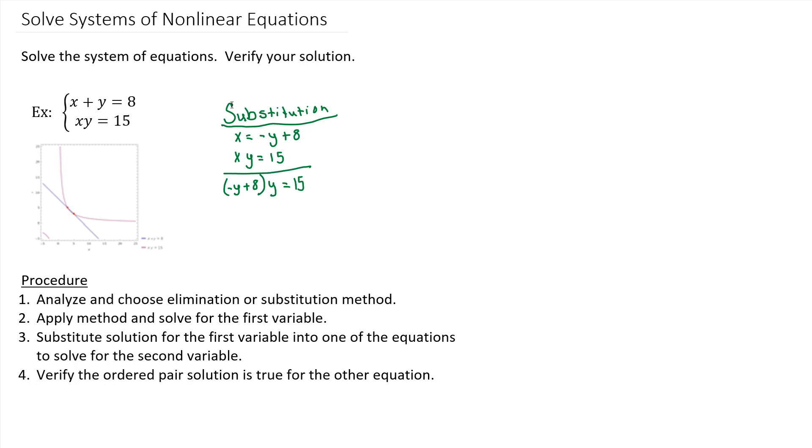I just need to distribute this Y on both pieces here. Y times negative Y is negative Y to the second. 8 and Y, when multiplied together, is 8Y equals 15. So you can see we're left with a quadratic.